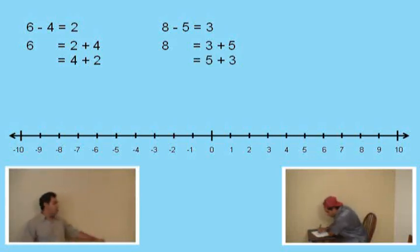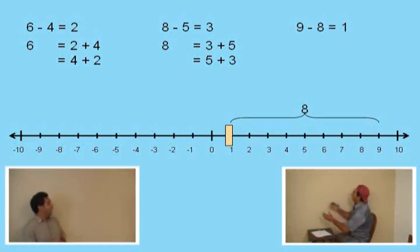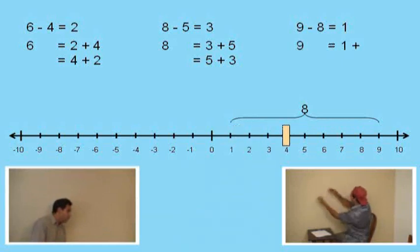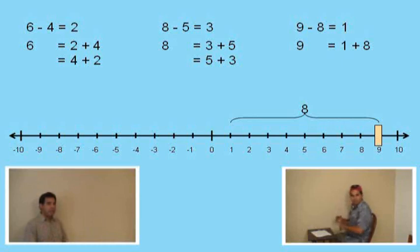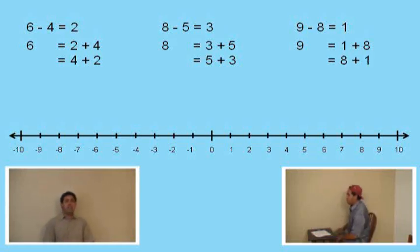One more subtraction problem, Charlie. Let's do nine subtract eight. What is nine subtract eight? One. Very good. And what number do we add to one to get nine? Eight. Right? That is right. It is eight. Now, by the commutative property for addition, one plus eight is the same as? Eight plus one. Very good, Charlie.